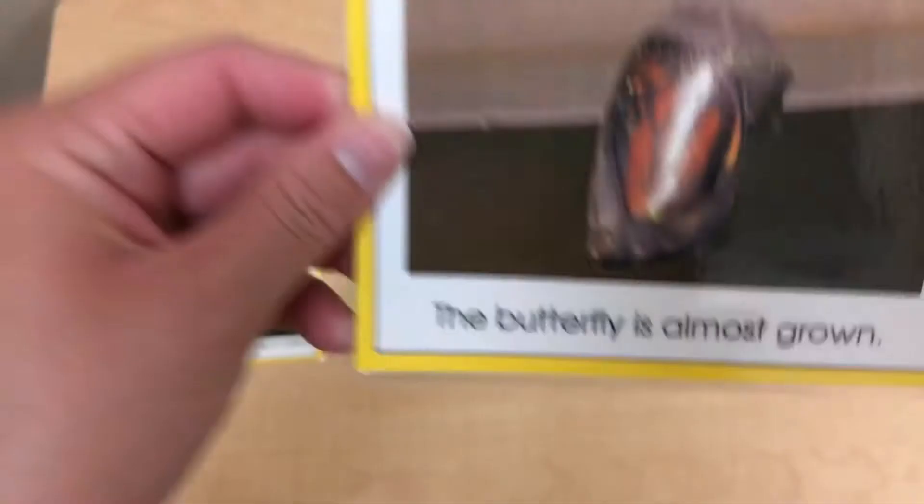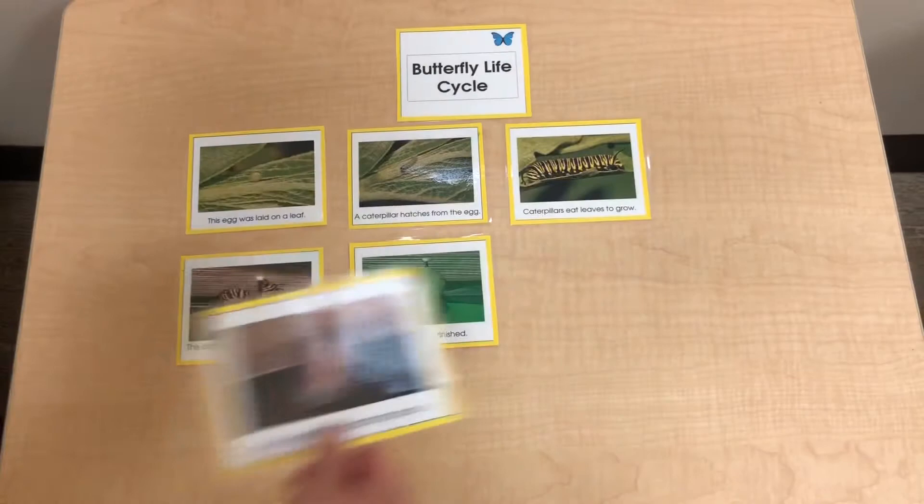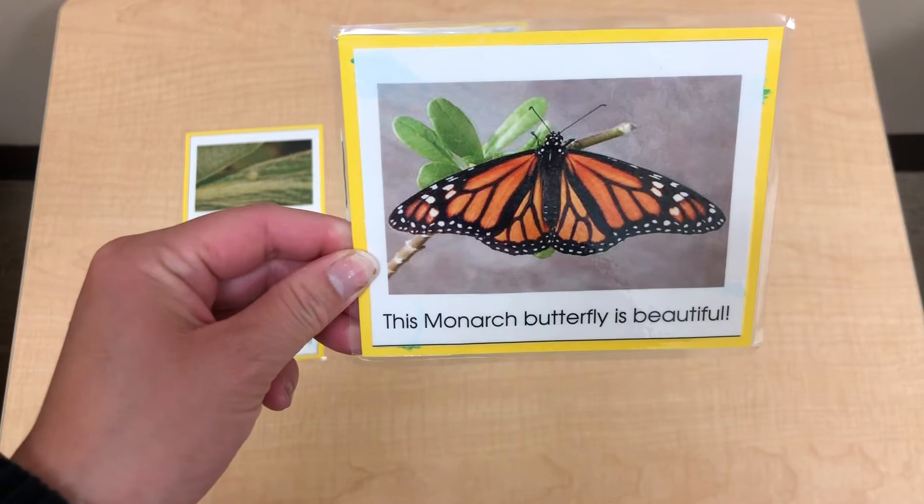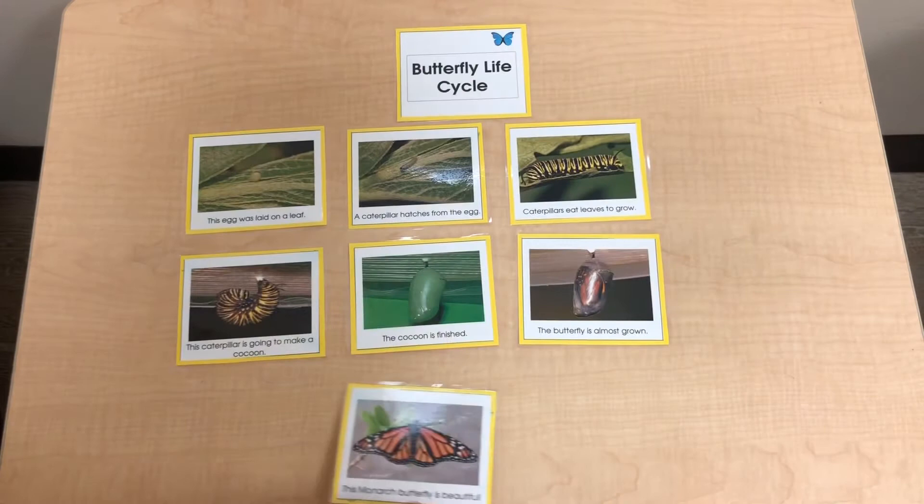The butterfly is almost growing. And finally this Monarch butterfly is beautiful. The butterfly came out of the cocoon or the chrysalis. This is how the caterpillar is growing — the life cycle of the butterfly.